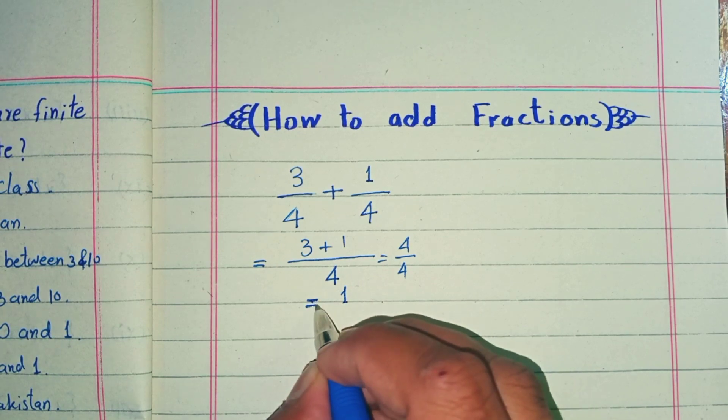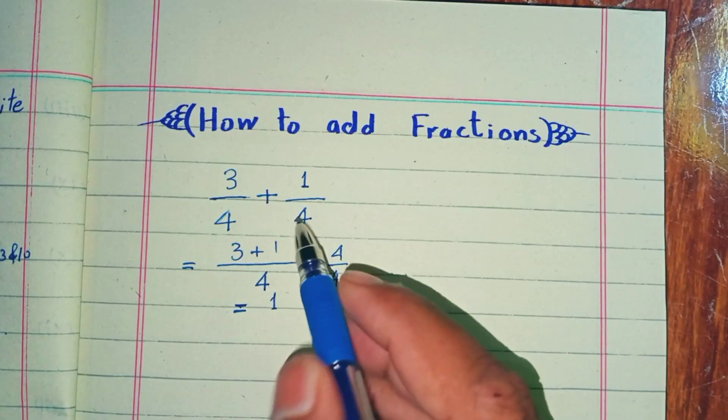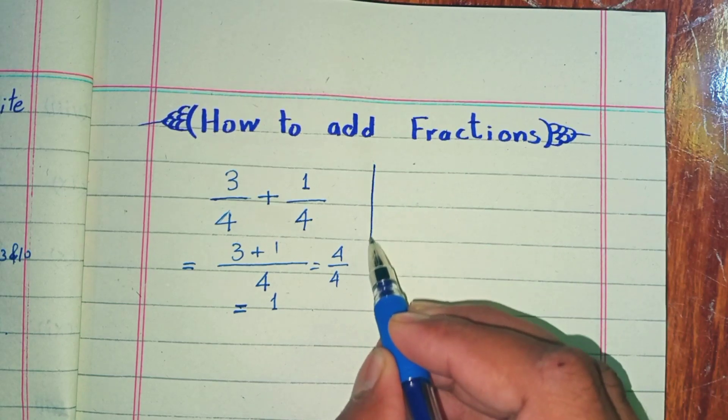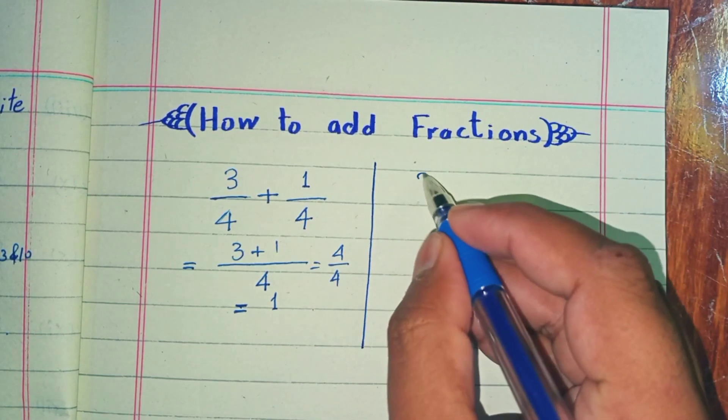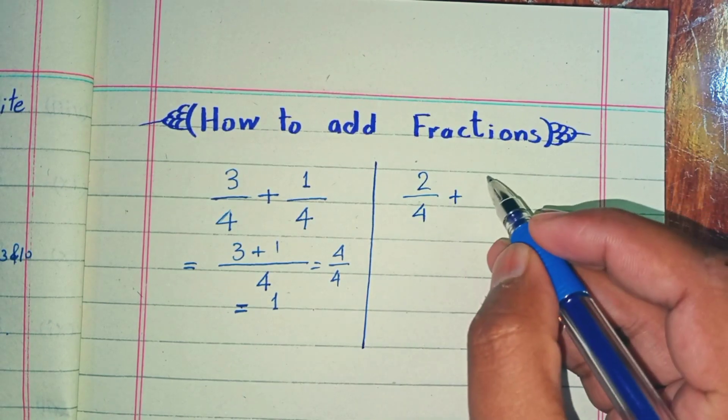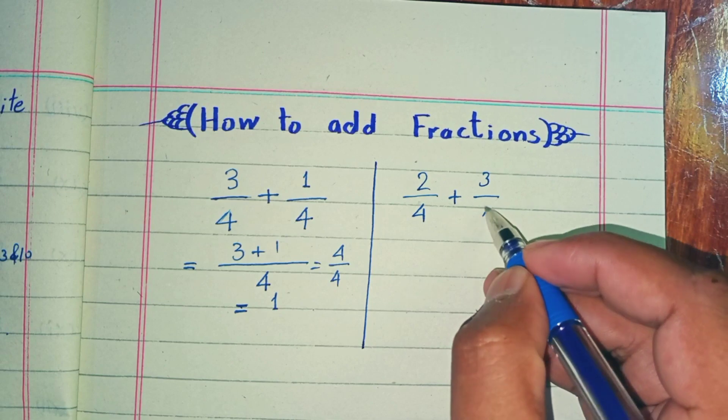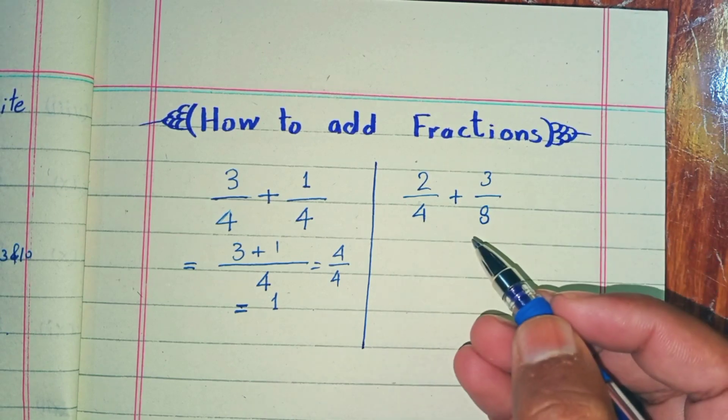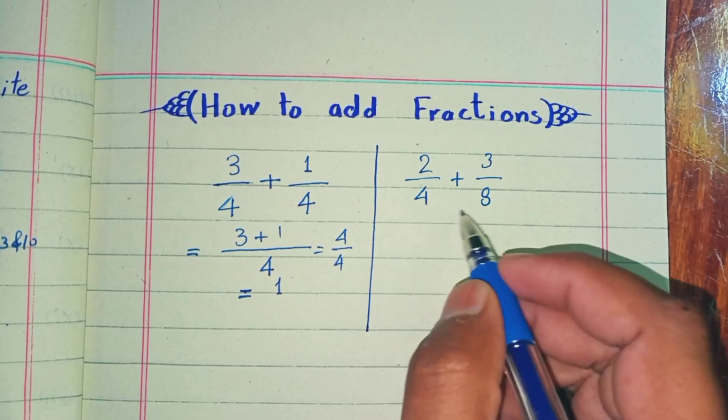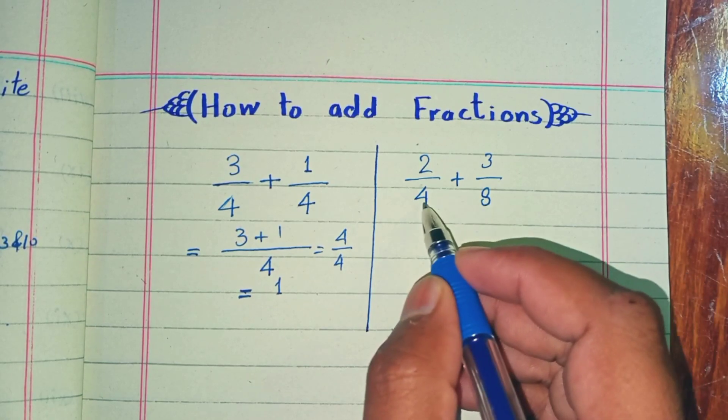If we have different denominators, then how can we add these fractions? For example, we have 2/4 plus 3/8. To add these fractions, we have to make the denominators the same. As you can see here, 8 should be the common denominator.